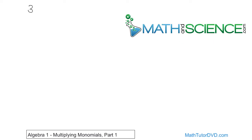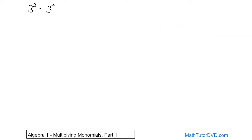For instance, if you have 3 squared, which, remember, means 3 times 3, and if you're multiplying it by 3 cubed, which, remember, 3 cubed is 3 times 3 times 3. Then how do you simplify that?